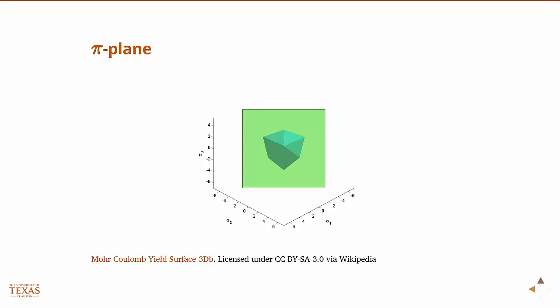The pi plane, if you look at the axis here, if you go back to the other one, it had sigma one, sigma two, sigma three. Then you have a line called the hydrostat. This is the line, sigma one equals to sigma two equals to sigma three. So this is called the hydrostat. Well, that line is right there.